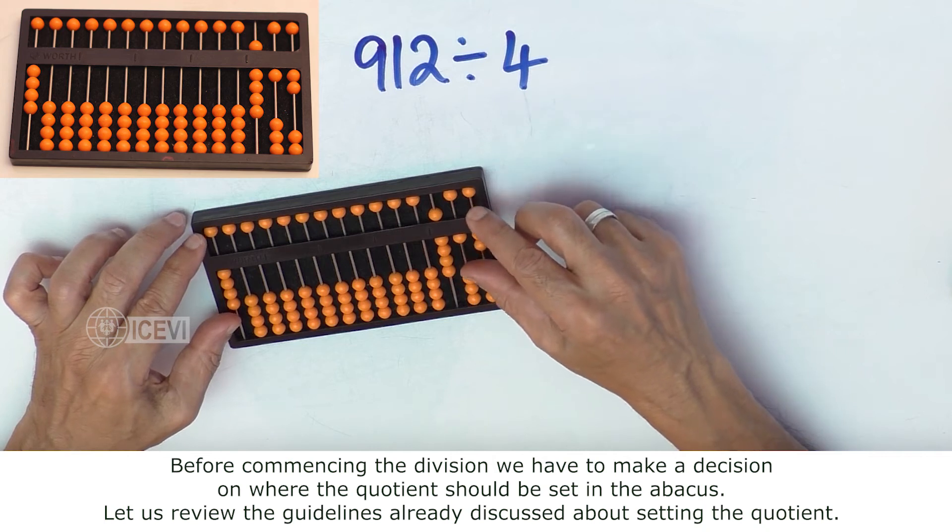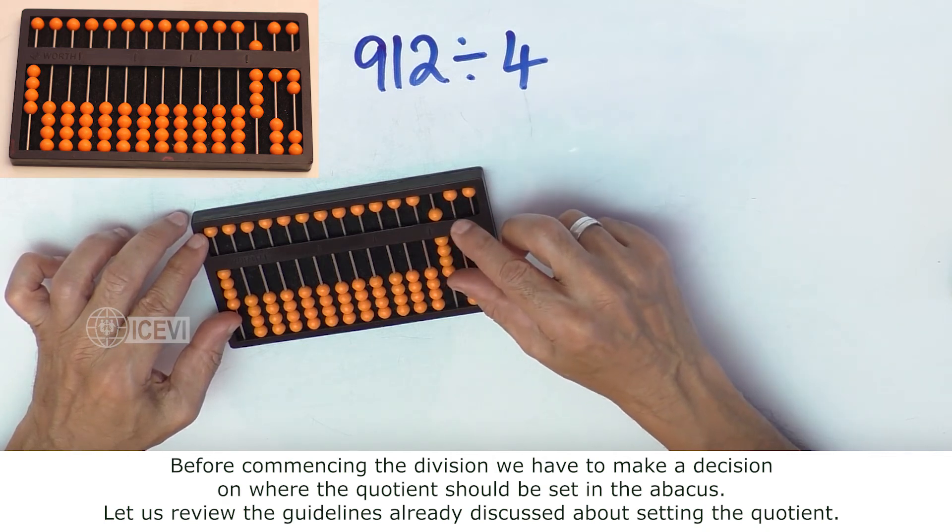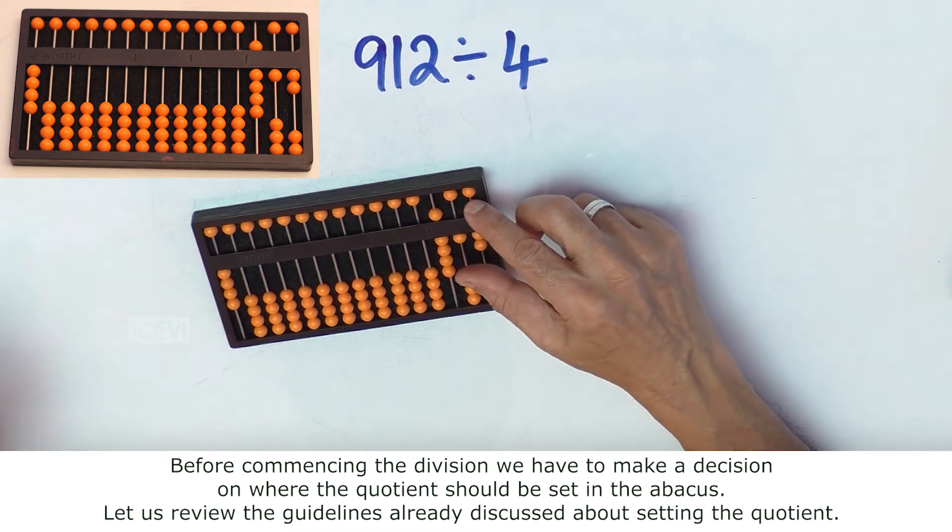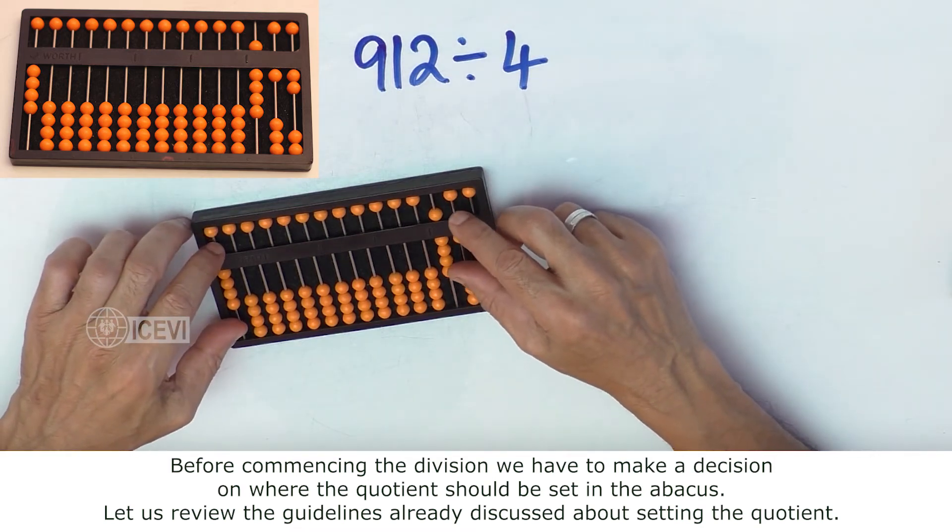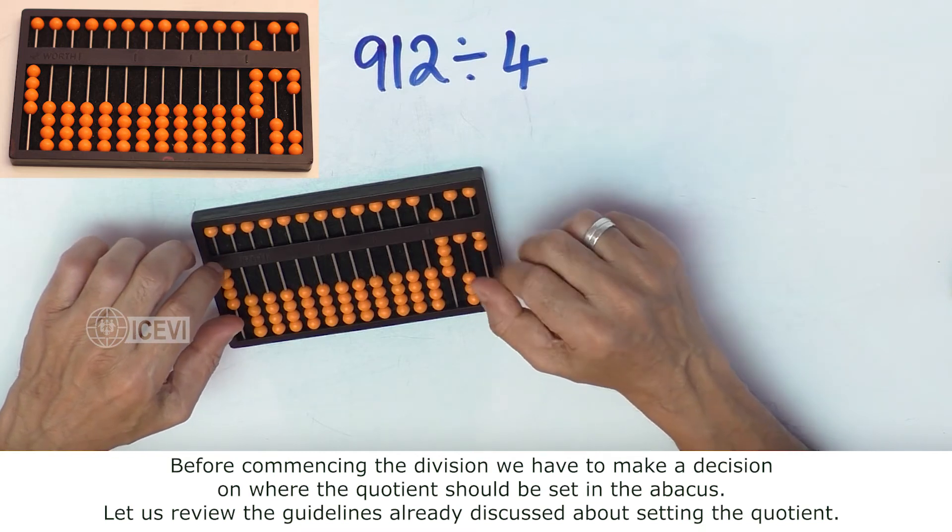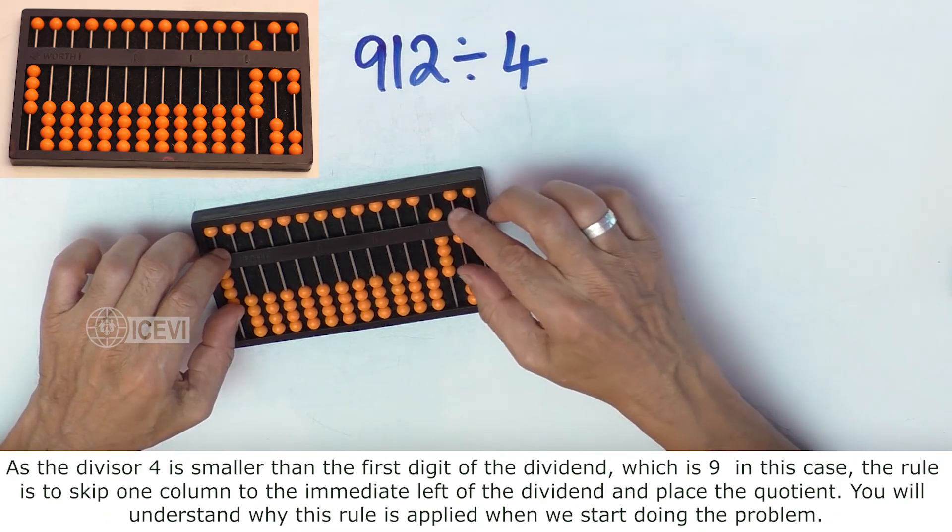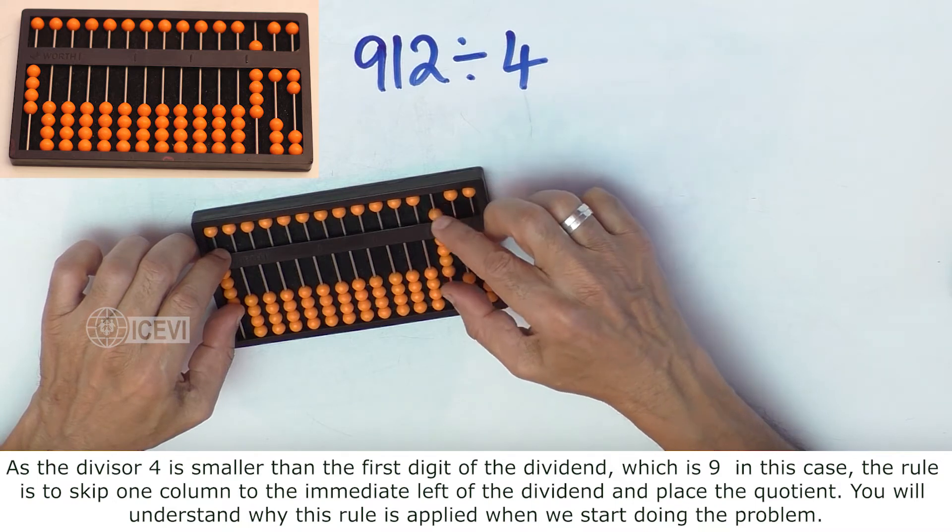Before commencing the division, we have to make a decision on where the quotient should be set in the abacus. Let us review the guidelines already discussed about setting the quotient.